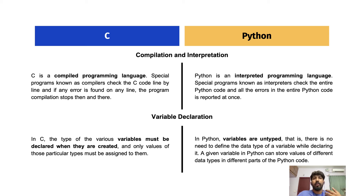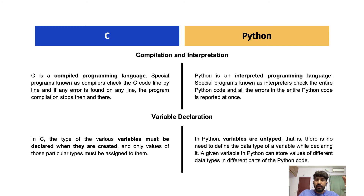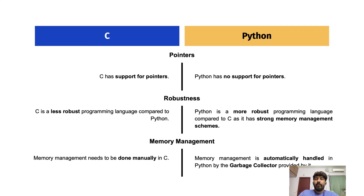Regarding variable declaration: in C, all variables must be declared when they are created and only values of those particular types can be assigned. For example, you must specify 'int' for integers or 'double' for floats. In Python, you don't have to declare data types — it's dynamically typed. You can write 'number = 3.14' and it will automatically be treated as a float. A variable in Python can even store values of different data types in different parts of the code. C supports pointers; Python does not.